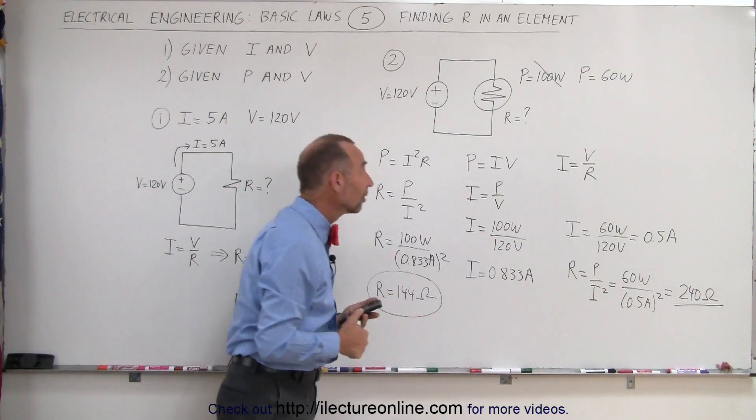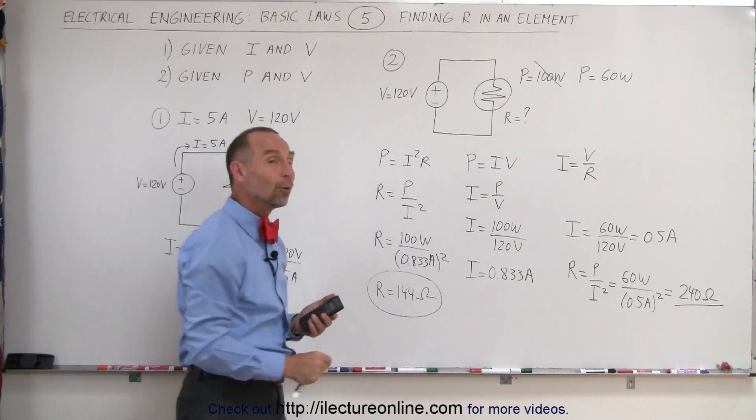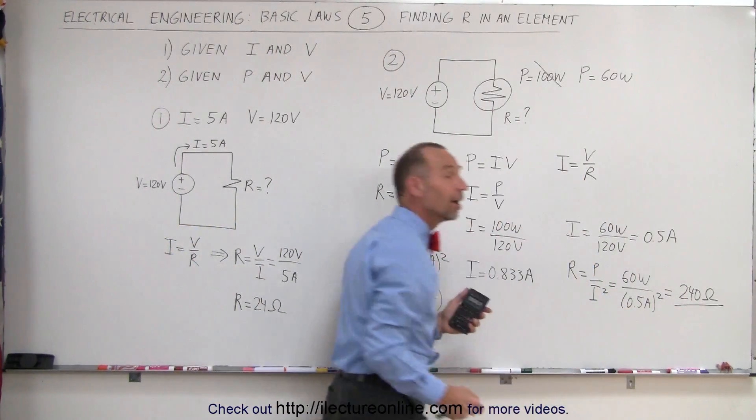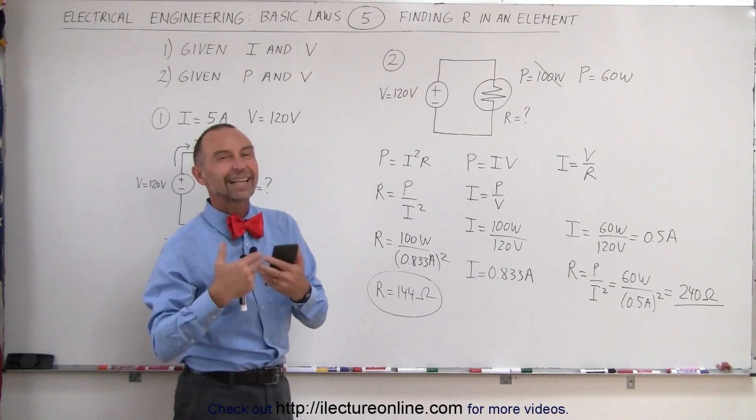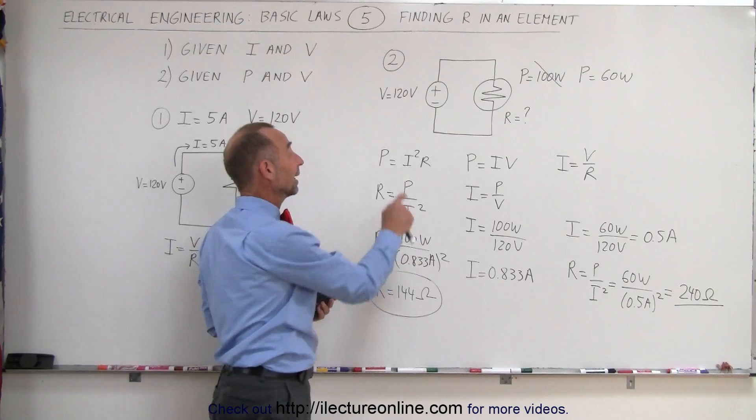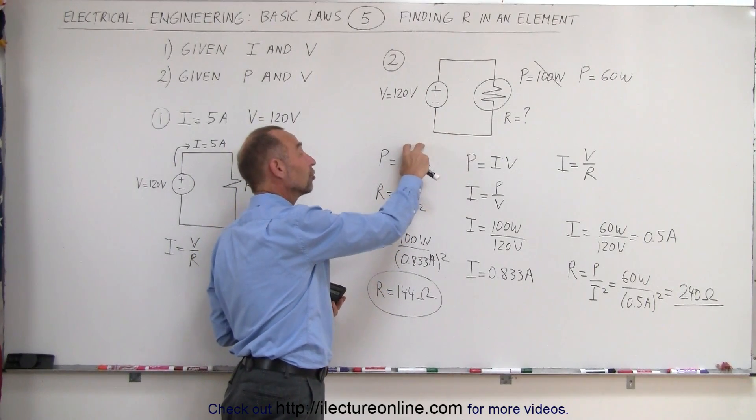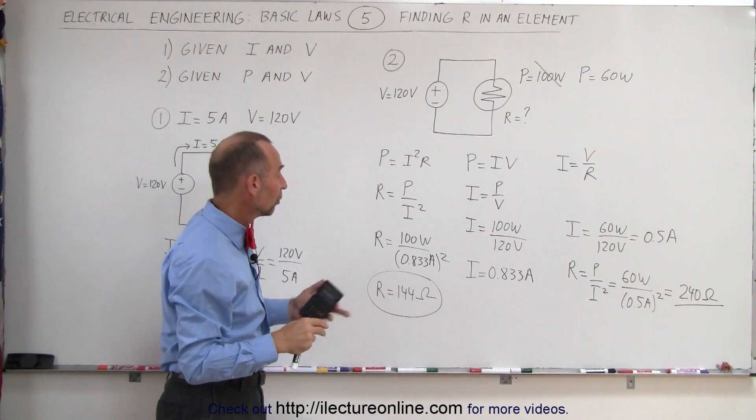Notice that a 100 watt light bulb has a resistance of 144 ohms and a 60 watt light bulb actually has a higher resistance. A higher resistance means a lower current. A lower current means less power consumed. Again, power equals I squared R. So therefore, there's a larger increase in the current with a smaller resistance.